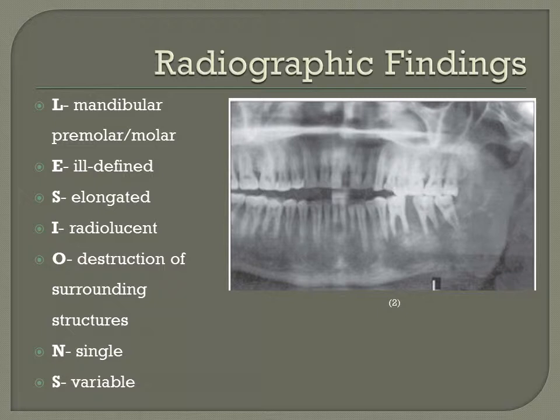Internal structure: radiolucent. Fibrosarcomas typically show complete destruction of surrounding structures depending on location of the lesion. Examples include the alveolar process, inferior border of the mandible, mandibular canal, floor of the maxillary sinus or nasal cavity, posterior border of the maxilla, lamina dura, cortical plates, or periodontium surrounding the teeth. Number: typically they occur singly. Size: variable depending on time of diagnosis or stage of tumor. This pantomograph shows the ill-defined borders and radiolucent internal structure.